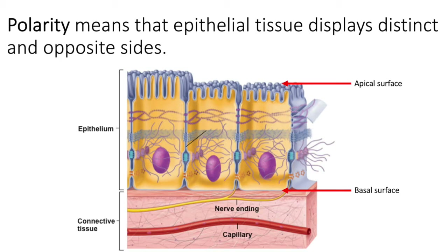Polarity means that epithelial tissue has two distinct sides. Think about the wall in your house — there's a surface that faces you with paint on it, exposed to your environment. But if you were to probe inside the wall, on the other side it faces the internal environment, which you can compare to the connective tissues. These opposite sides of epithelial tissue mean that it's polar — each side is experiencing something very different.